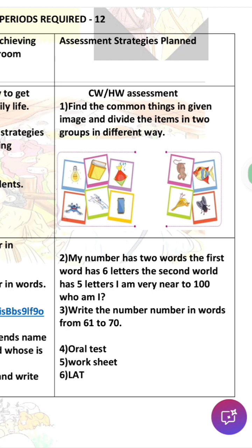Find the common things in a given image and divide the items into two groups in different ways — for example, living and non-living things — but don't give children a hint; they will categorize on their own. This encourages open-minded, open-ended questions for assessment. Another assessment activity: 'My number has two words; the first word has six letters, the second word has five letters; I am very near to hundred — who am I?' This is a puzzle for children.